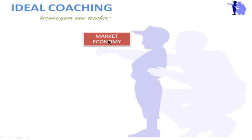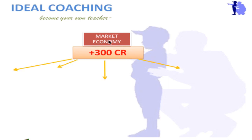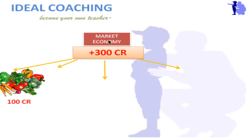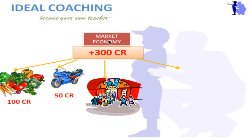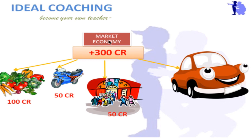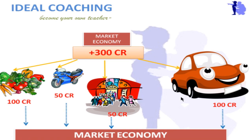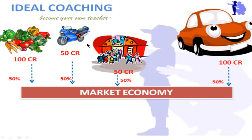Let us understand this more clearly. Suppose 300 crores comes into the market. That will be invested in many things — for example, people will spend on vegetables (100 crores), buying bikes (50 crores), expenditure on cinemas and entertainment (50 crores), and on luxuries like cars and other items (100 crores). This entire money comes into the market economy, because the money you spend is being earned by the owner of the car, the entertainment industry, the bike shop, or the vegetable seller.